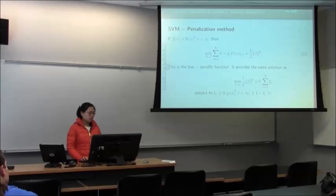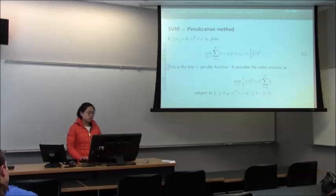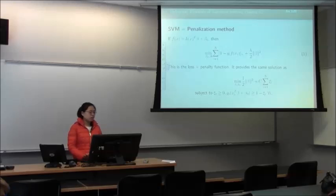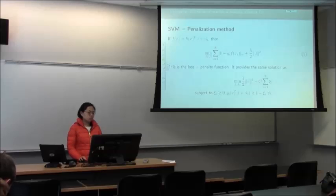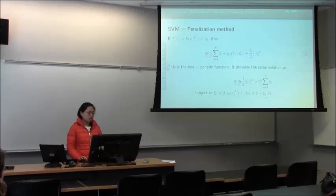The book defines f(x) as x^T beta plus beta-0, and the solution to the minimization of the loss function — specifically (1 minus y-i times f(x-i)) plus — plus a penalty will be the same as the solution to the optimization problem shown in the first slide.